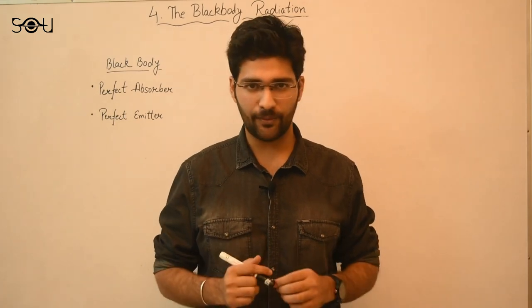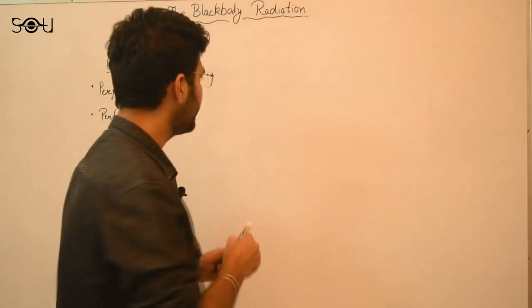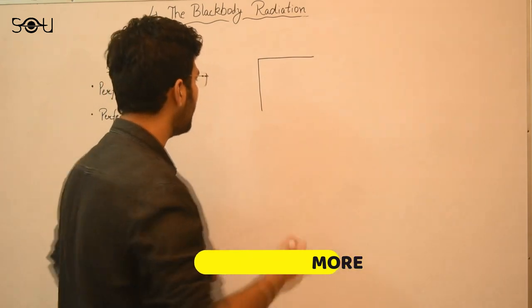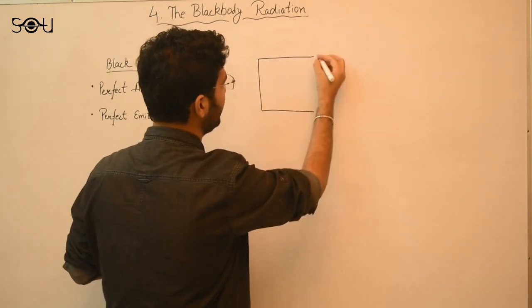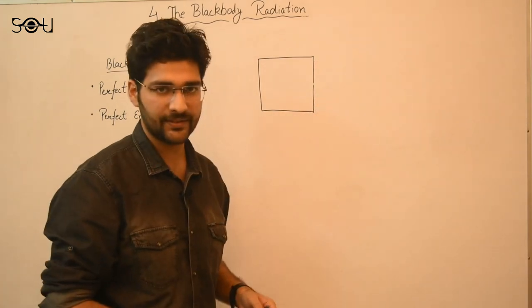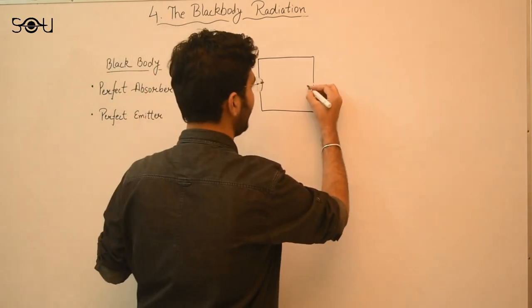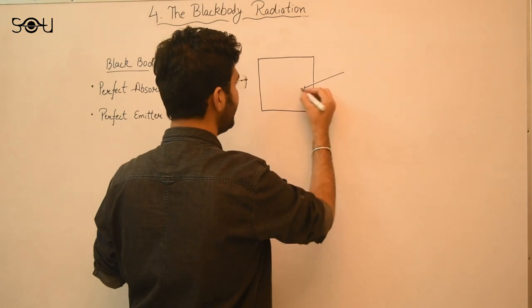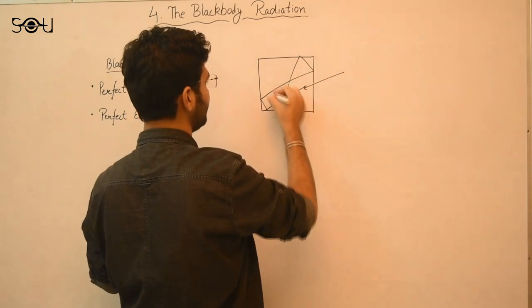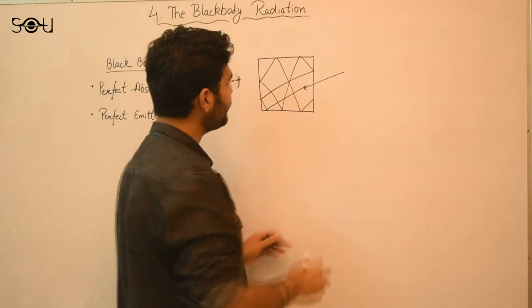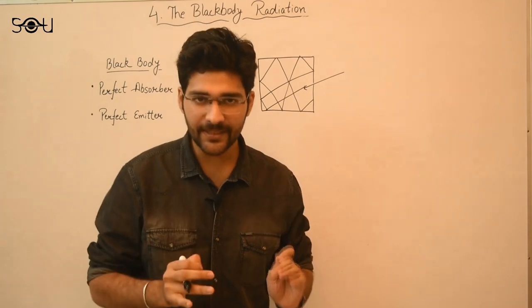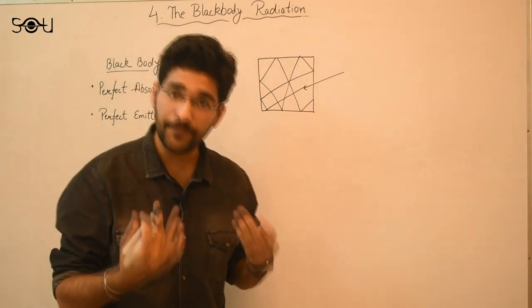You may ask how to create such a body — it's very simple. All you have to do is take an opaque box — it can be of wood, cardboard, or metal — and keep a small hole open through one of its faces. This is a black body. Any radiation that enters through the hole gets reflected from the inner walls multiple times before being completely absorbed in the box. So any radiation falling on it is absorbed — it's a perfect absorber.